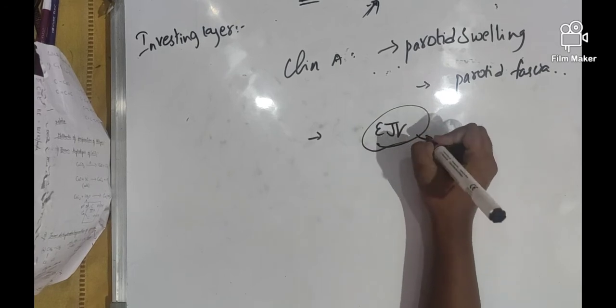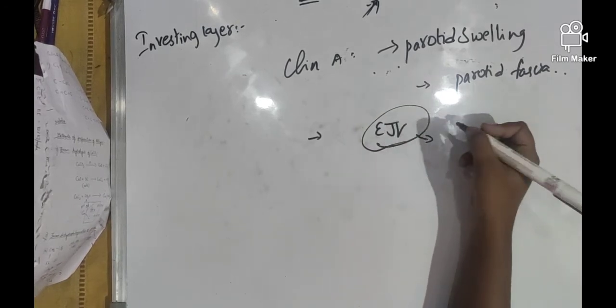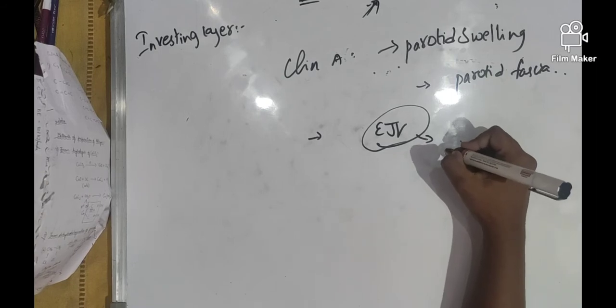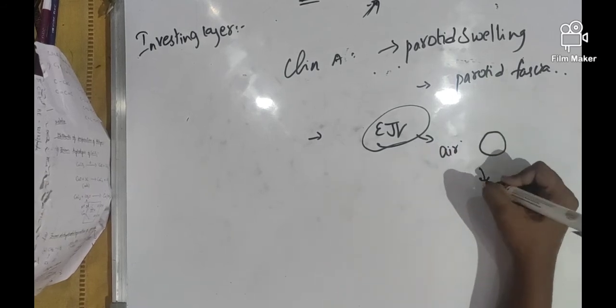We have division of external jugular vein in the supraclavicular space where it is present, and it may cause air embolism, which is nothing but air getting filled, and it leads to circumstances like death.